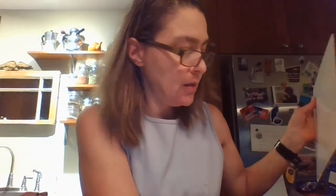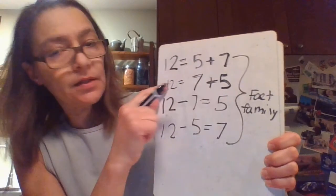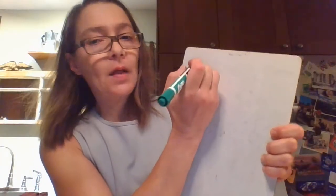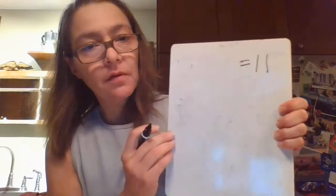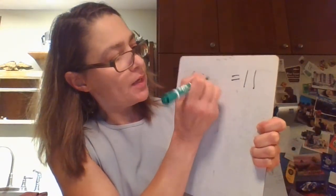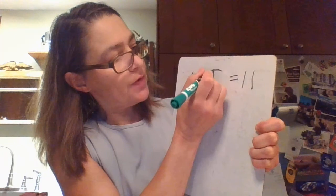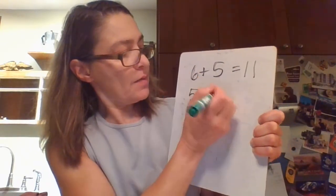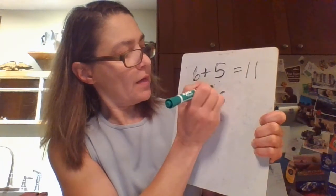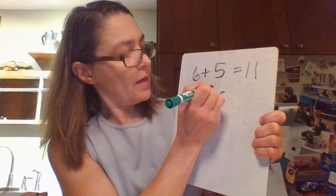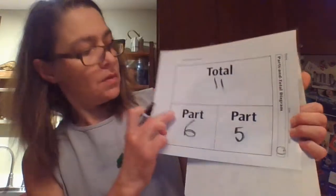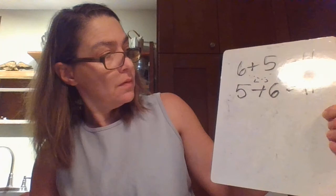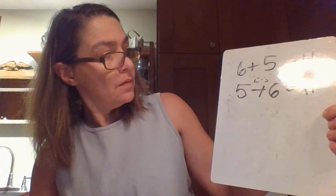Let's do another one with the whole written after. We'll work up to 11. So we have 6 plus 5. Work with me and try it. The turnaround fact is 5 plus 6 — equals the same total. 6 plus 5 equals 11, and 5 plus 6 also equals 11 because they're related.